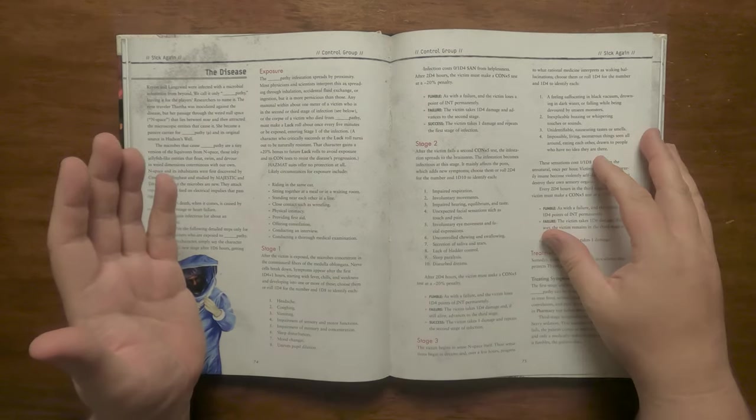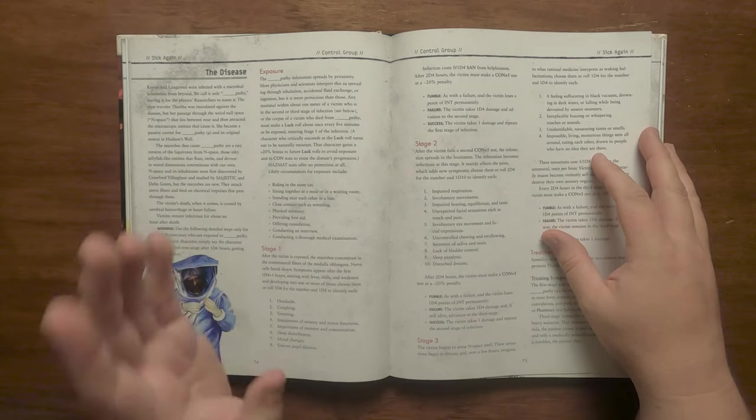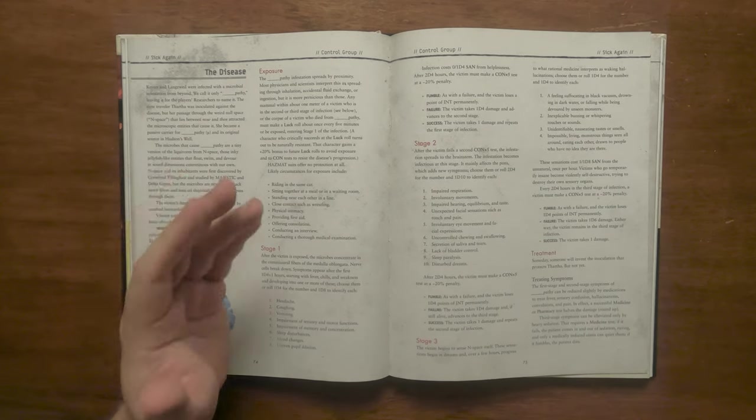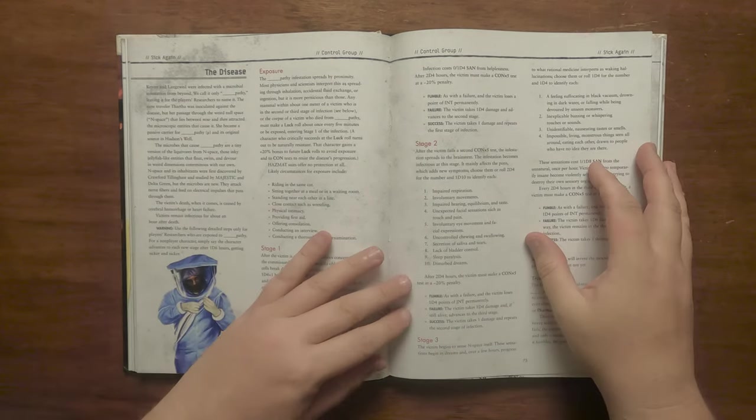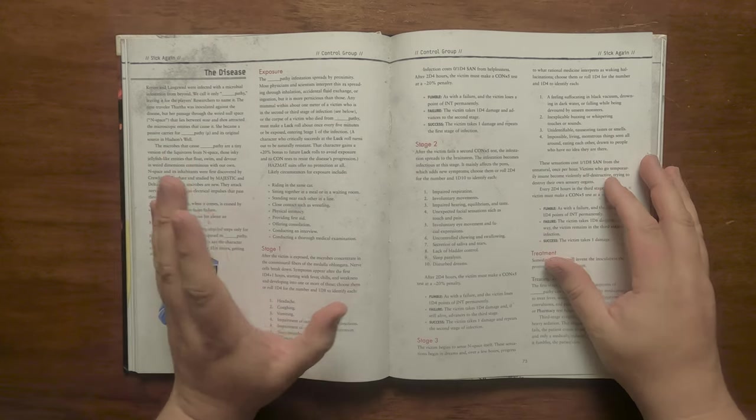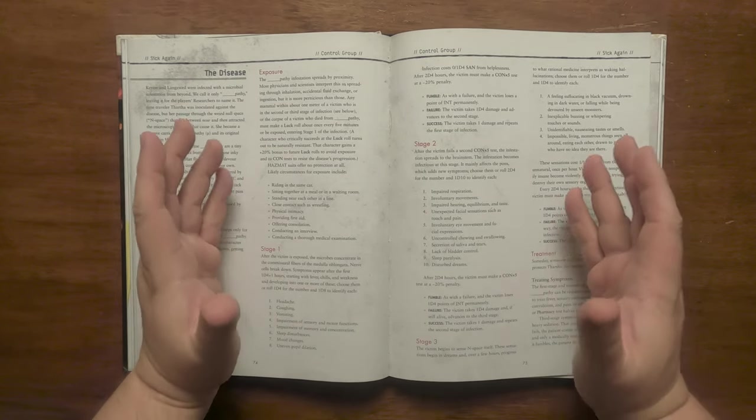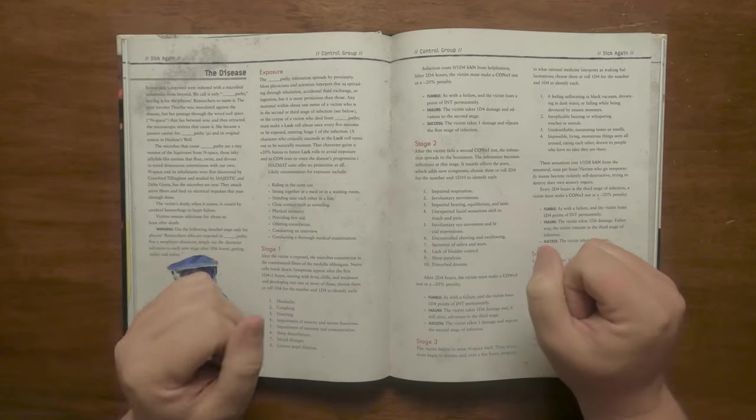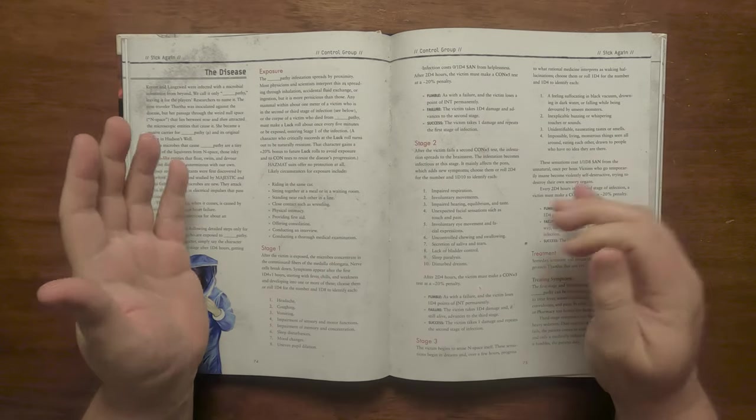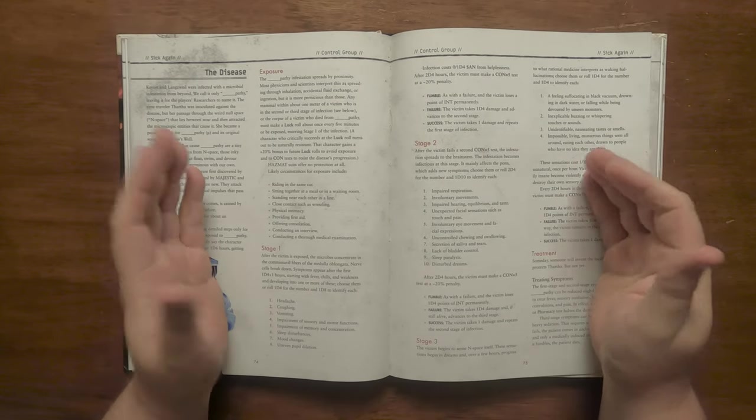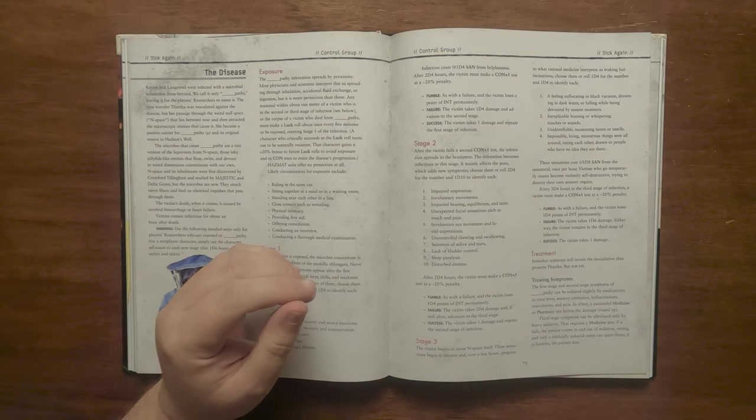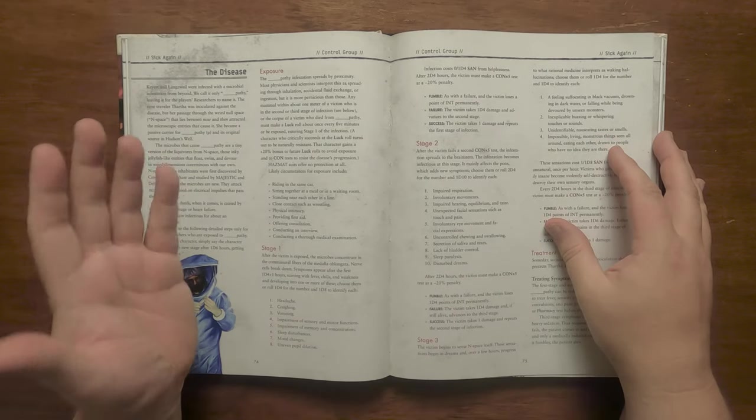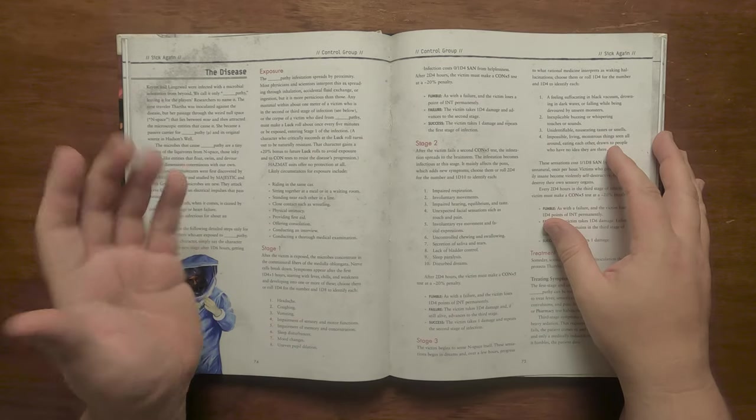The disease itself is called Blank Pathy. The researchers need to name it and this is important later on. Thartha is inoculated against it. However, her passage from then to now attracted the microscopic entities that cause it and she is essentially the patient zero. The entities that cause it are microscopic liquivores from n-space that shift between dimensions. They attack nerve fibres and feed on electrical impulses. Those who die from it usually suffer heart failure or cerebral hemorrhaging and remain infectious for around an hour after death. It spreads via proximity, not by inhalation or fluid exchange, but by simply being near and hazmat suits offer zero protection.